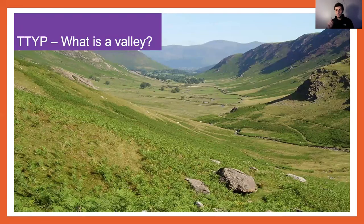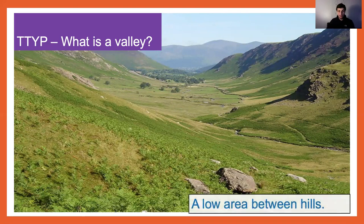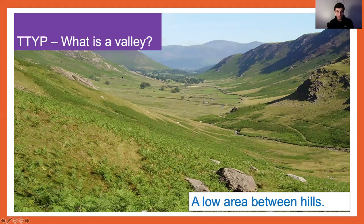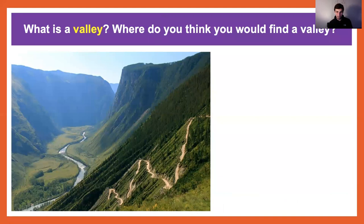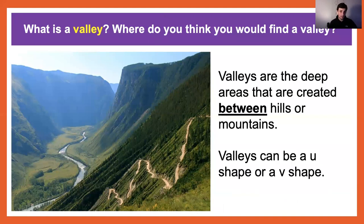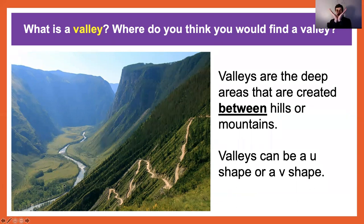What is a valley? Pause this video — can you remember what a valley is? Well done if you said there is a low area between hills. Here on either side you can see we've got a hill here and a hill here, and in the middle there is a low area — this is what we call a valley. They're the deep areas created between hills or mountains, and they can be a U-shape or a V-shape, sometimes with a river running through them.